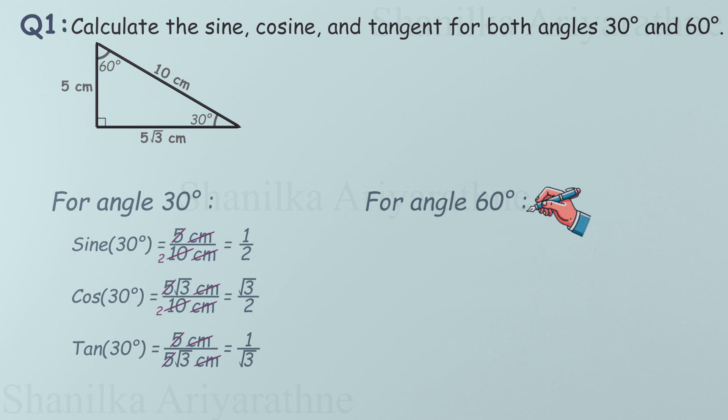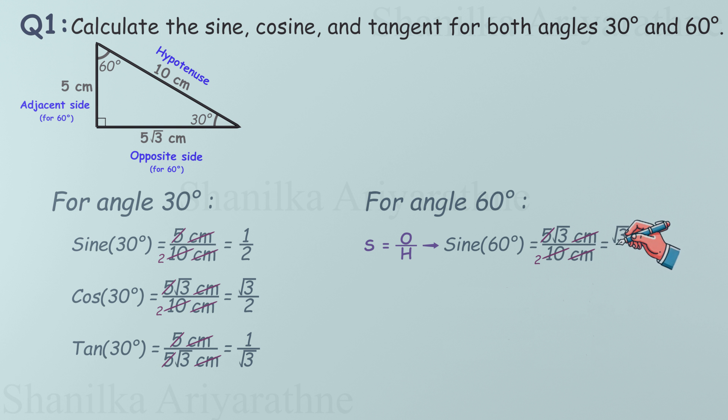Now let's move on to the 60 degree angle. Step 1 again: Identify the sides. Let's calculate the ratios. For sine of 60 degrees: opposite by hypotenuse, 5√3 over 10, simplifying to √3 over 2.